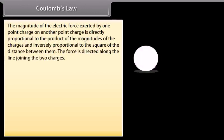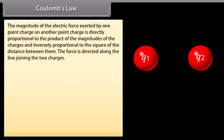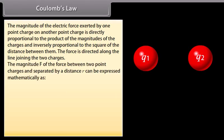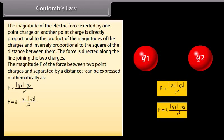Coulomb's law: the magnitude of the electric force exerted by one point charge on another point charge is directly proportional to the product of the magnitudes of the charges and inversely proportional to the square of the distance between them. The force is directed along the line joining the two charges. The magnitude F of the force between two point charges separated by distance r is expressed as F = k × |q1| × |q2| / r², where k is a constant of proportionality.